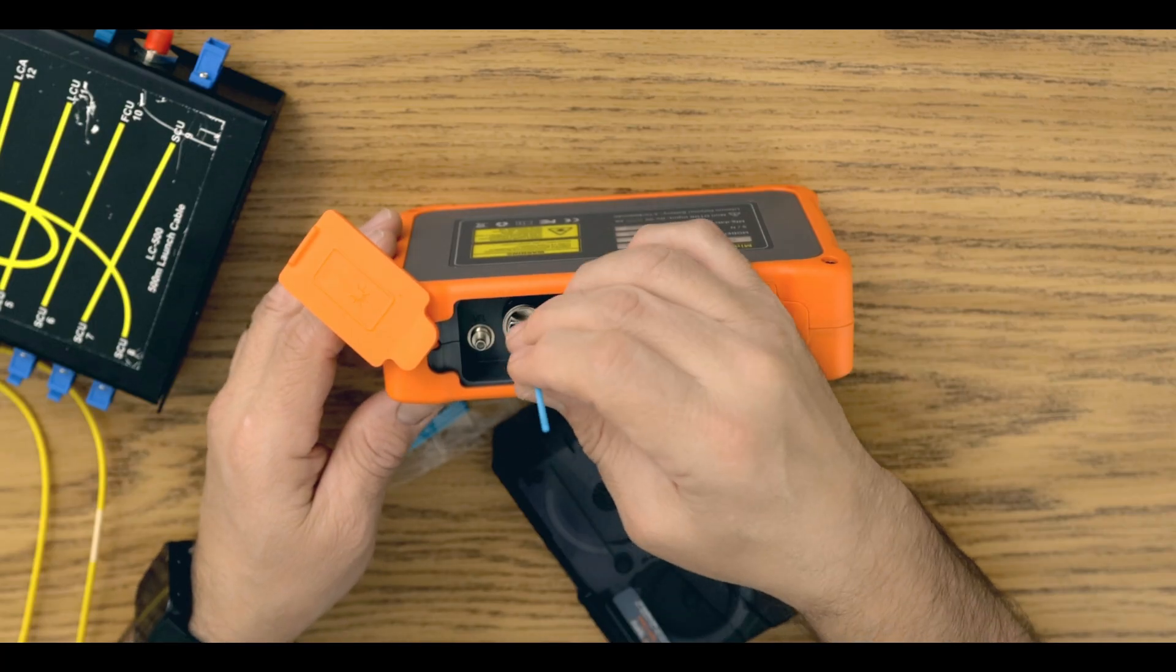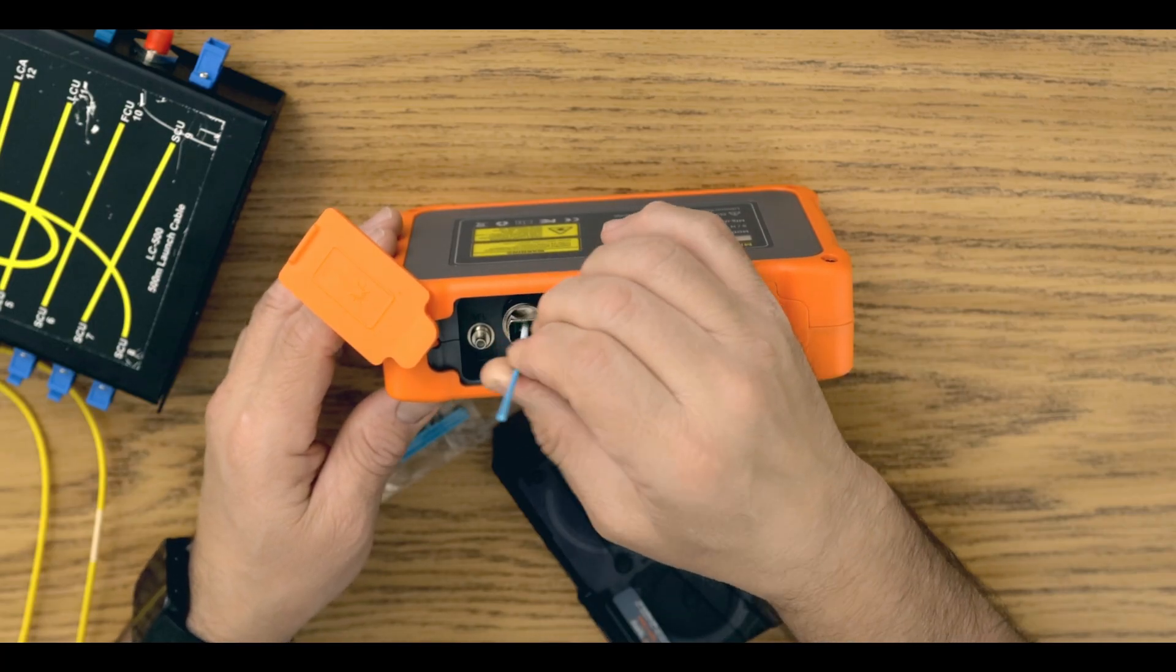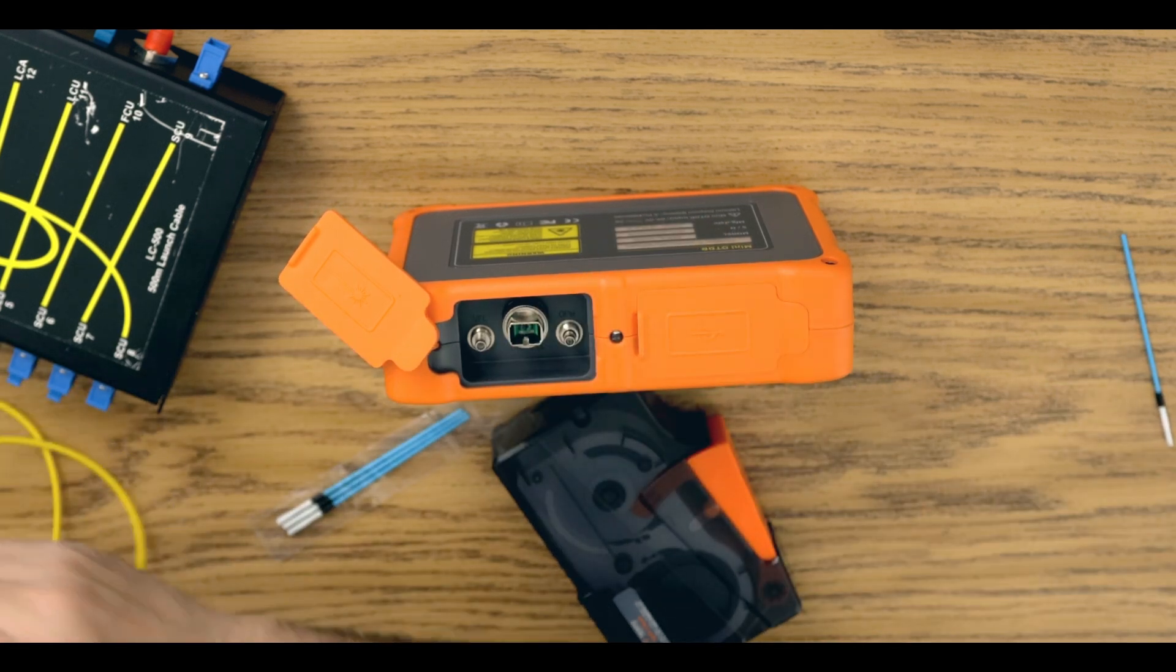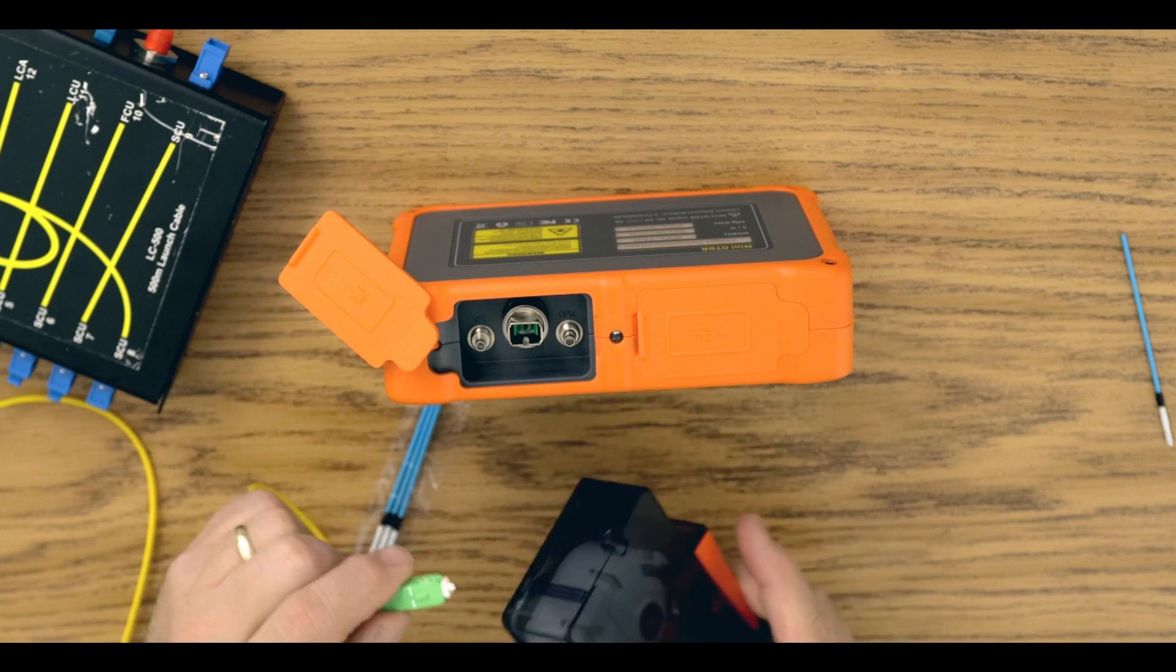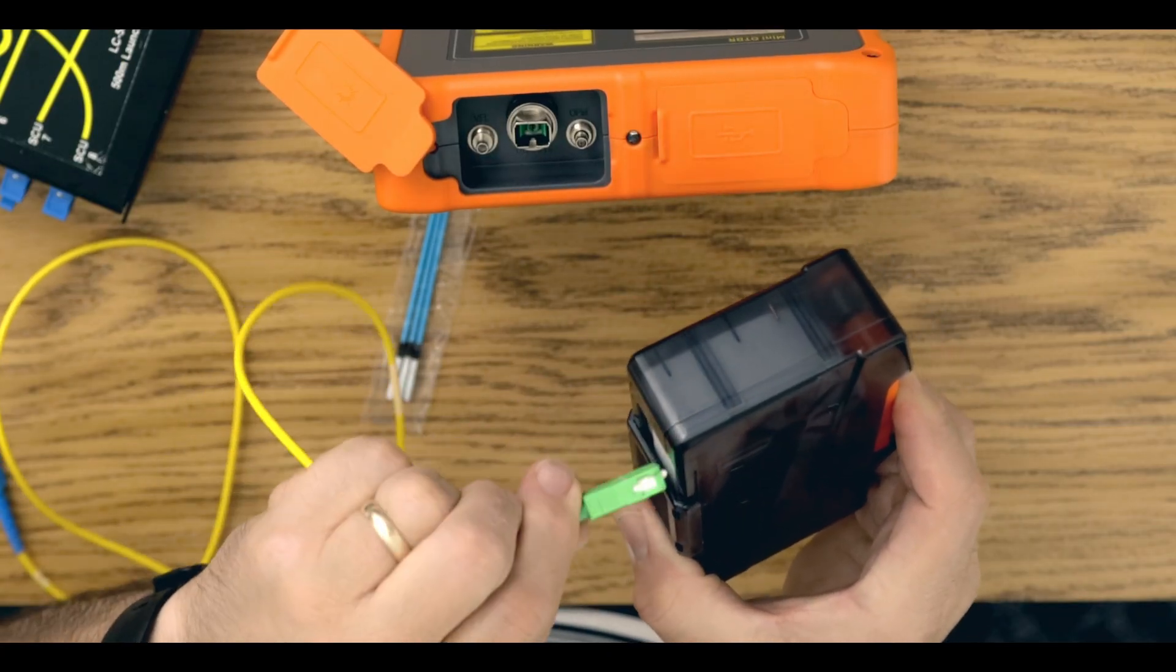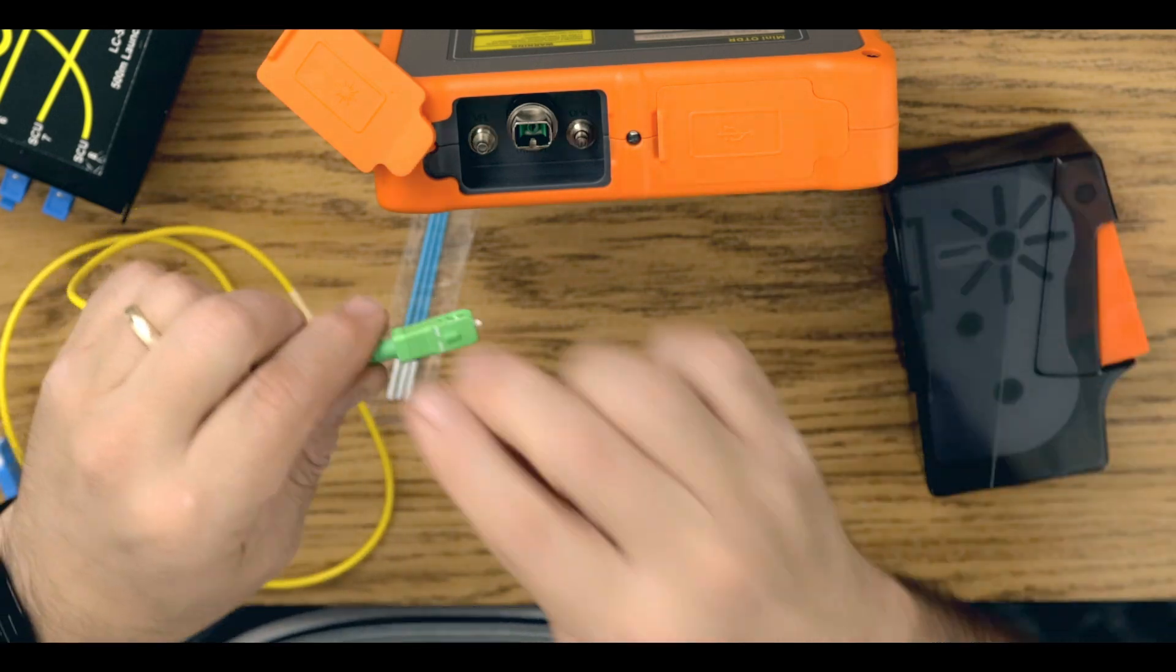Start by cleaning the bulkhead using a Tempo 2.5 millimeter swab. Next, clean the end of the SC APC connector of a 1 meter cable with the Tempo Reel Cleaner. Make sure to clean all bulkheads and ferrules prior to connection.